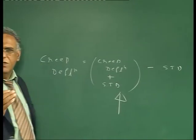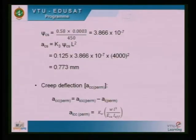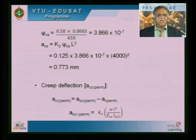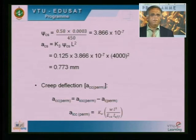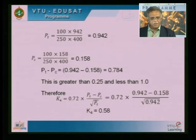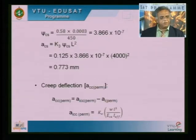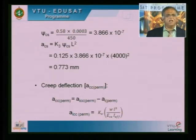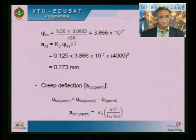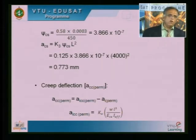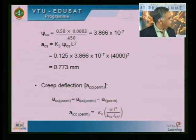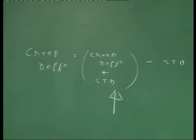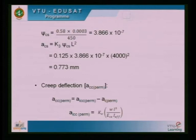Creep deflection is calculated as Δ_i.cc(perm) minus Δ_i(perm), where Δ_i(perm) represents the short term deflection already obtained as 1.39 mm. The next step is to calculate the value of Δ_i.cc(perm). Once you determine Δ_i.cc(perm), you deduct the short term deflection to get the final creep deflection. Δ_i.cc(perm) is the deflection due to both creep and short term loading combined.